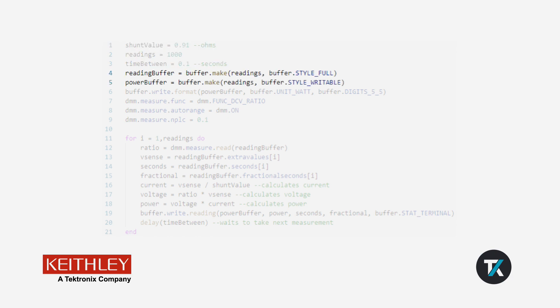Then, we'll make our buffers using the buffer.make command. One is a full buffer and the other is a writable buffer. Since we want to write power readings to the writable buffer, we'll format this one to display watts as the unit.